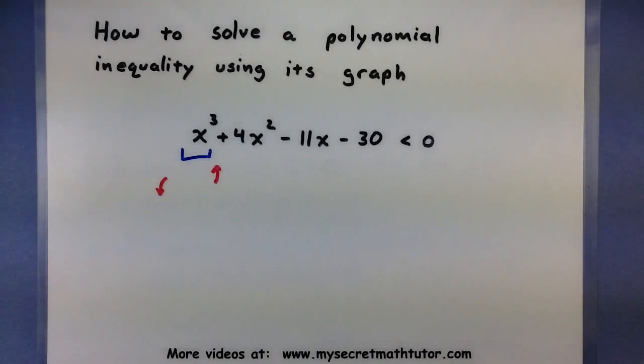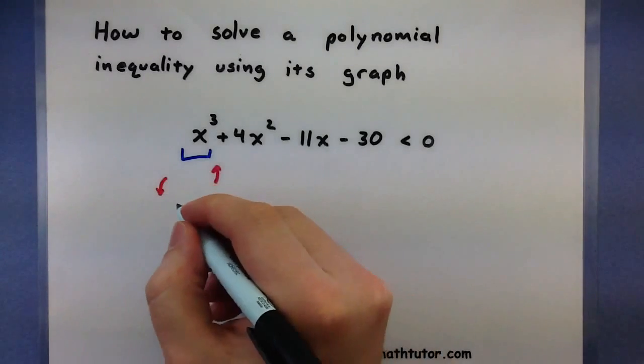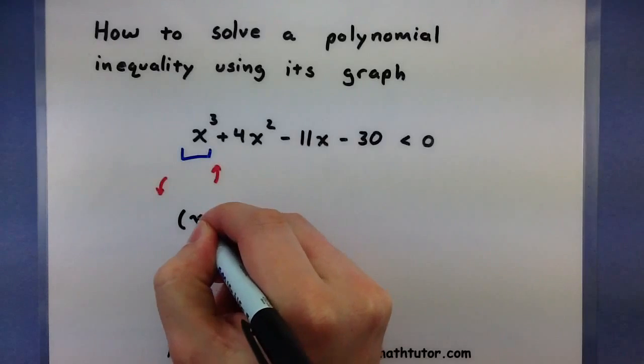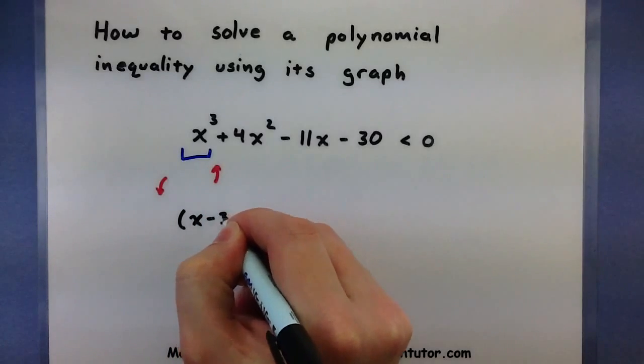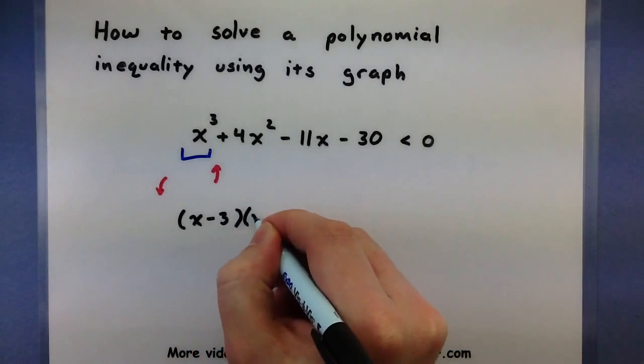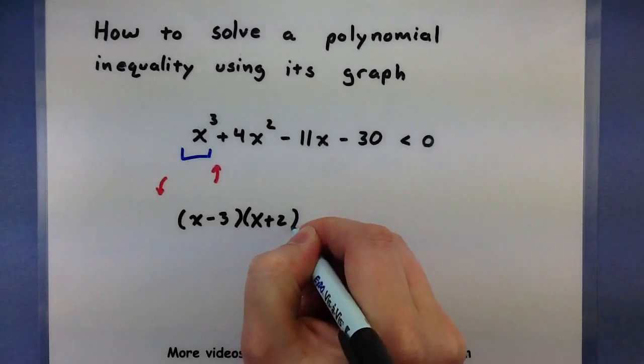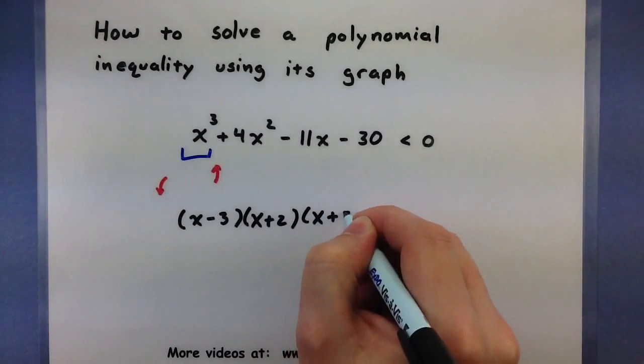Now that we have the end behavior, we want to start thinking about the zeros of this polynomial. So there's many techniques you could go through, but basically you want to take the entire polynomial and factor it. Now I've already done this one earlier, so I'm just going to show what the factored form looks like: x minus 3, x plus 2, and x plus 5.